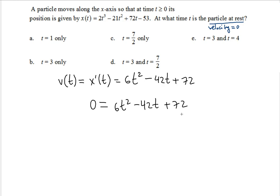Notice, first of all, before trying to factor this, divide all sides by 6. Luckily they're all divisible, you should get 0 = t² - 7t + 12.